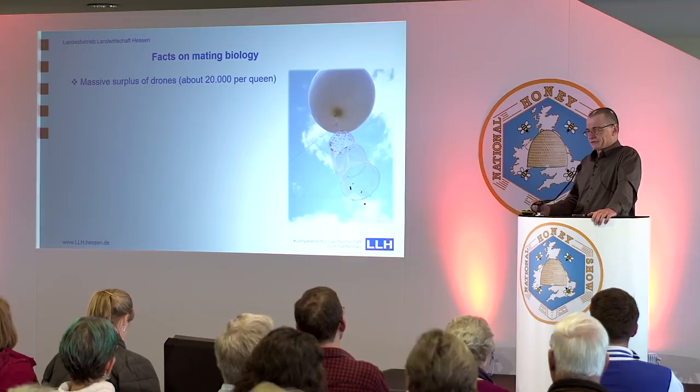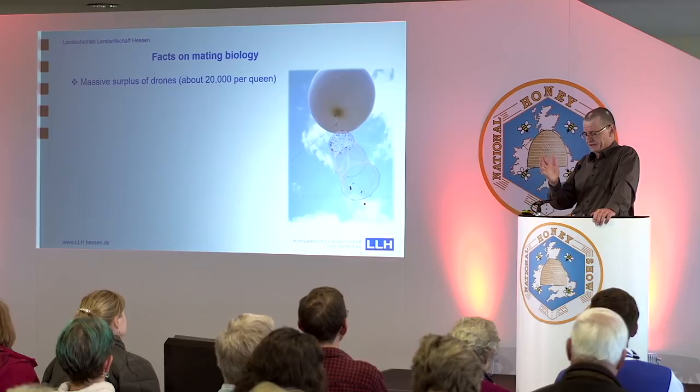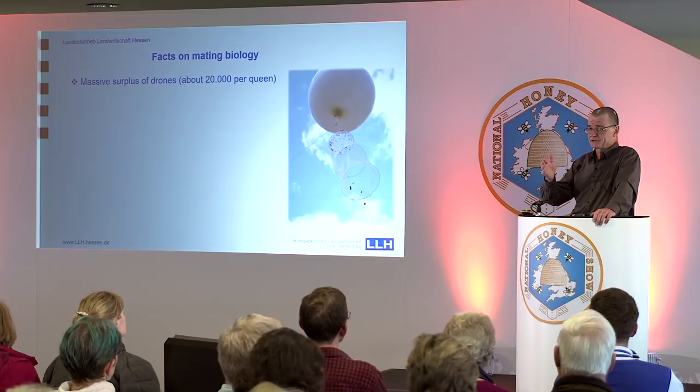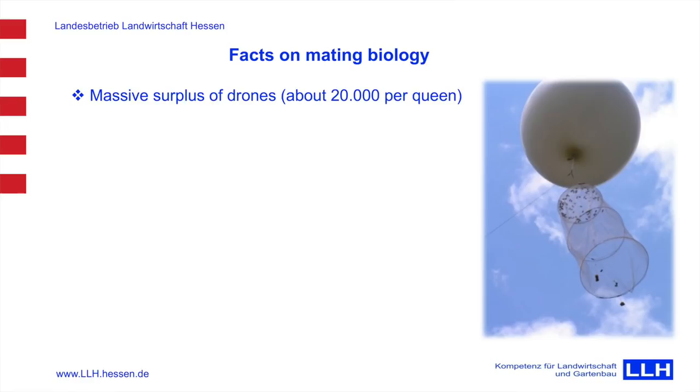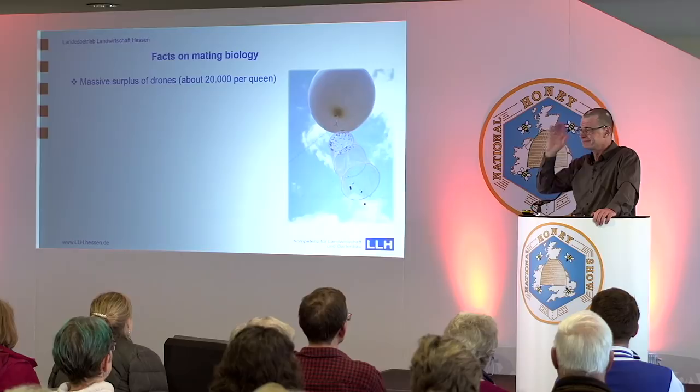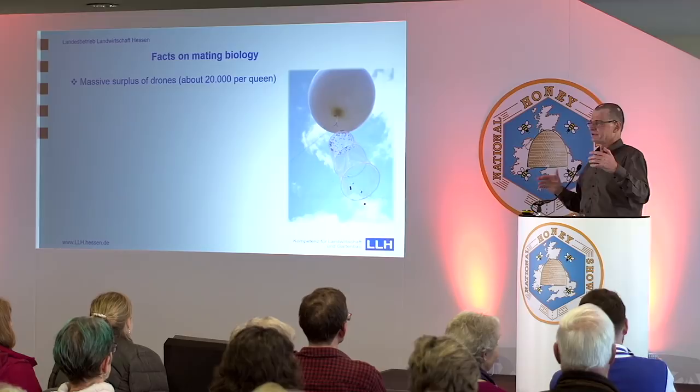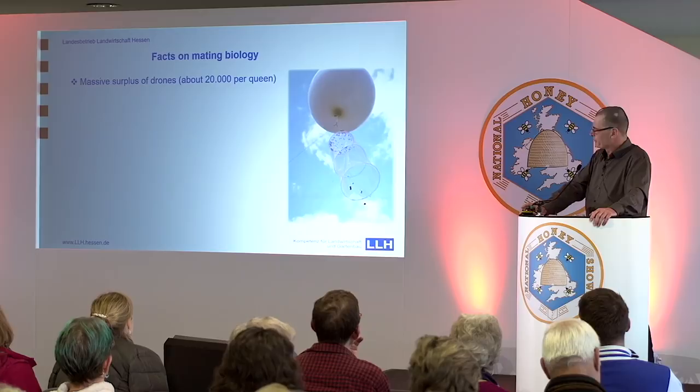So if they produce, let's say 20,000 to 25,000 drones on average, on the other side they may have a swarm or an exchange of queen at the end of the season — so the colony produces one or two queens a year. We have a relation of one to 20,000. How many drones are needed to get a full mating of the queen under natural conditions? 15 to 20 drones — this is a good average for open mating conditions. So we have a thousandfold this amount.